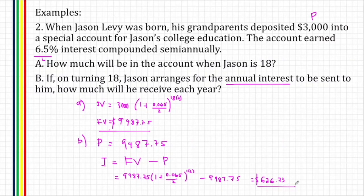So this is the amount that Jason wants to get every year. That is the interest of the new principal amount, $9,487.75.